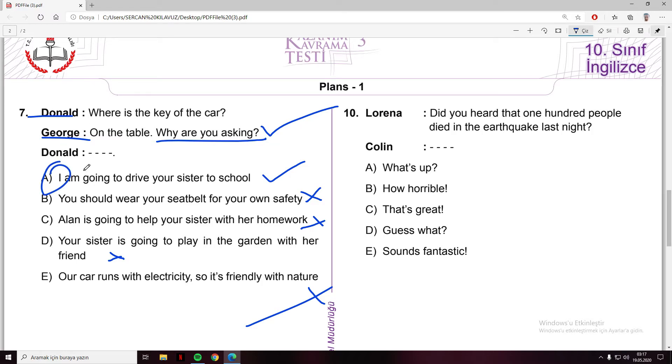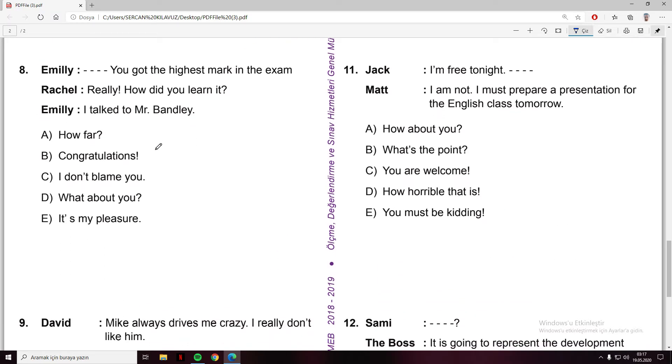Number eight: Emily and Rachel. Emily, you got the highest mark in the exam. Rachel: really, how did you learn it? Emily said I talked to Mr. Bentley. What is our suitable answer? How far - no. Congratulations, you got the highest mark in the exam - yes, it's like a reward. I don't blame you - no. What about you - no. It's my pleasure - no. The answer is B, congratulations.